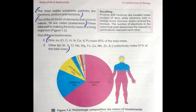Now let me tell you the names of those 6 elements that make 99% of the mass. They are: oxygen (O), carbon (C), hydrogen (H), nitrogen (N), calcium (Ca), and phosphorus (P). So these are the 6 bio-elements that make up 99% of the body mass.